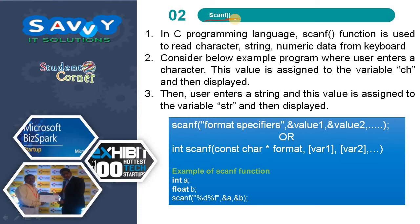In C programming language, scanf function is used to read character, string, and numeric data from the keyboard. Consider an example program where the user enters a character — this value is assigned to variable ch and then displayed. The user enters a string, this value is assigned to variable str and then displayed. The syntax for scanf is: scanf(format_specifiers, &value1, &value2, ...).